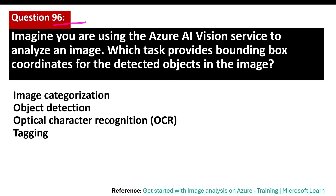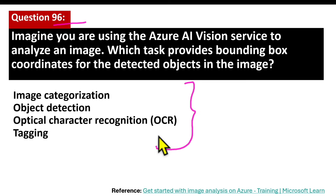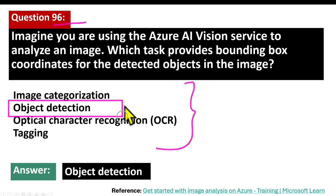Question number 96. Imagine you are using the Azure AI Vision service to analyze an image. Which task provides bounding box coordinates for the detected objects in the image? The correct answer is object detection. Detecting objects identifies common objects and for each returns bounding box coordinates.